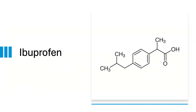Now let's move on to ibuprofen, a well-known non-steroidal anti-inflammatory drug molecule. It's used to reduce fever and treat pain or inflammation. Ibuprofen was first marketed as Brufen and is considered one of the safest non-steroidal anti-inflammatory drug molecules. First we will draw the benzene ring, then we will add the isobutyl group and the propanoic acid group at the corresponding positions.